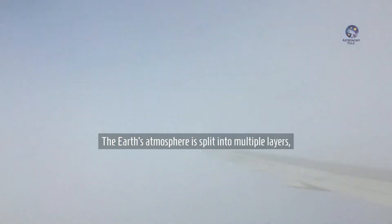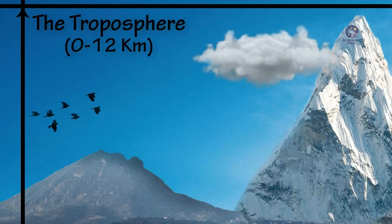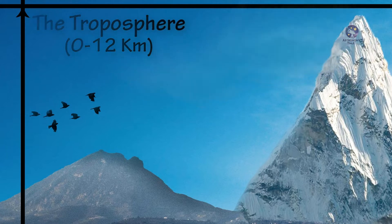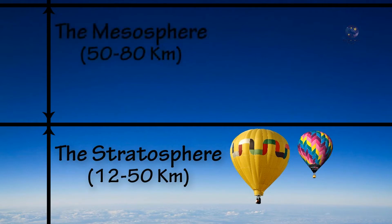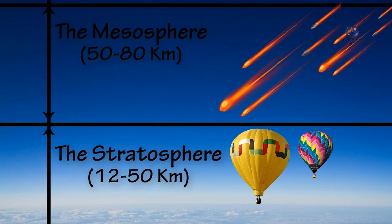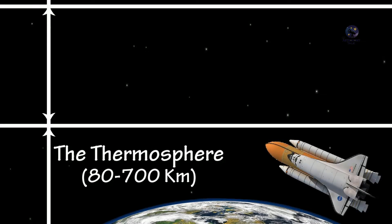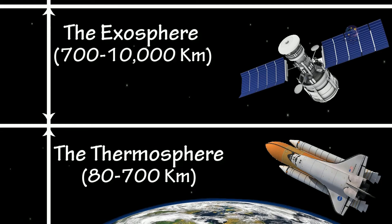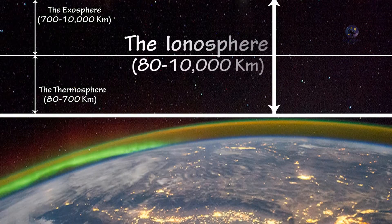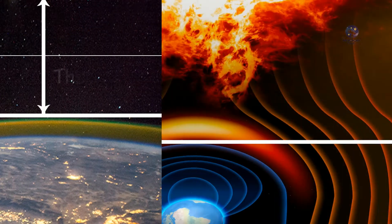The Earth's atmosphere is split into multiple layers: the troposphere, the stratosphere, the mesosphere, the thermosphere, the exosphere, the ionosphere, and the magnetosphere.